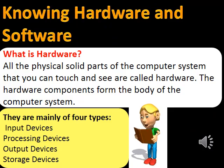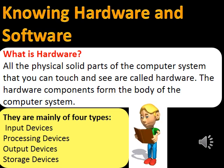Knowing hardware and software. What is hardware? All the physical solid parts of the computer system that you can touch and see are called hardware. The hardware components form the body of the computer system. They are mainly of four types: first, input devices; second, processing devices; third, output devices; and fourth, storage devices.